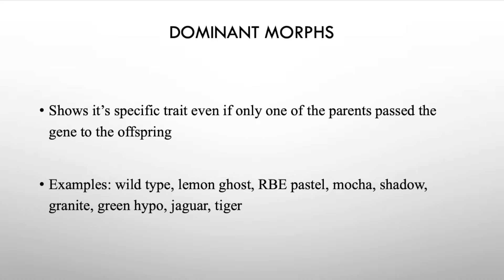Let's get started with the dominant morphs. Dominant morphs show a specific trait even if only one of the parents passed the gene to its offspring. Some examples are the wild type or normal hognose, lemon ghost, RBE, pastel, mocha, shadow, granite, green hypo, jaguar, tiger — some of these are pattern morphs and some are color morphs.